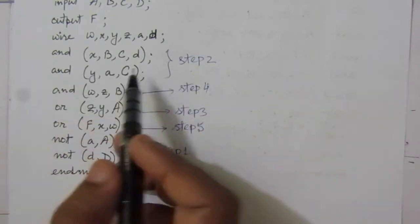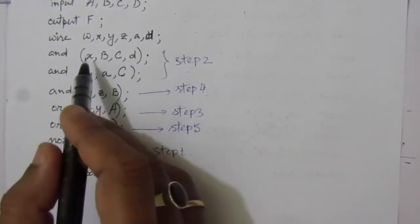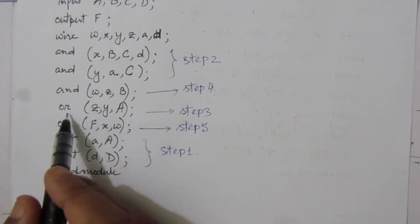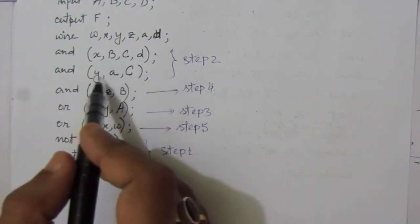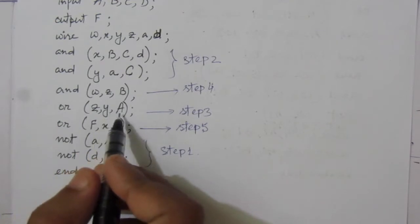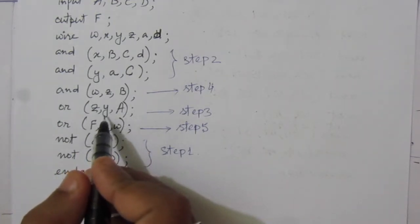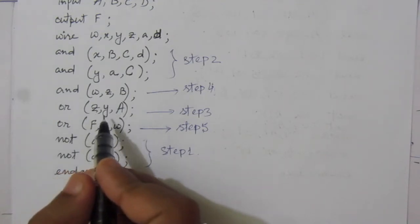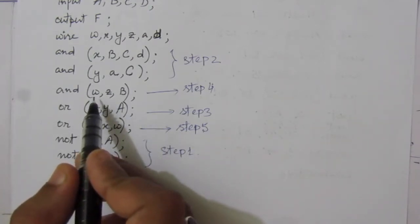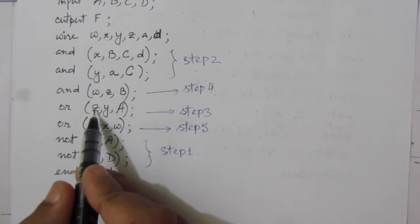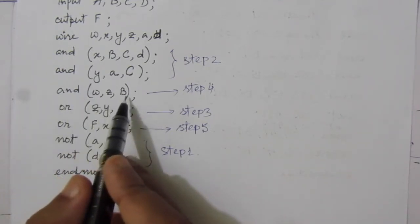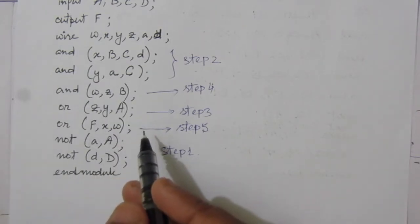In the second step we find x and y using AND operations. In the third step we find small z, which is the OR operation between small y and capital A. In the fourth step we find small w, which stores the AND operation between small z and capital B. In the fifth step we find capital F using the OR operation between small x and small w.